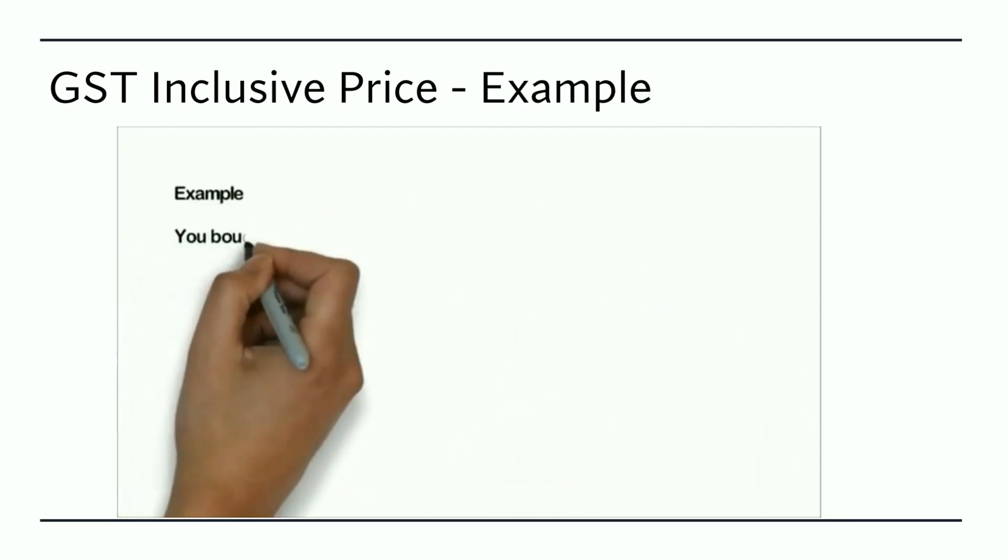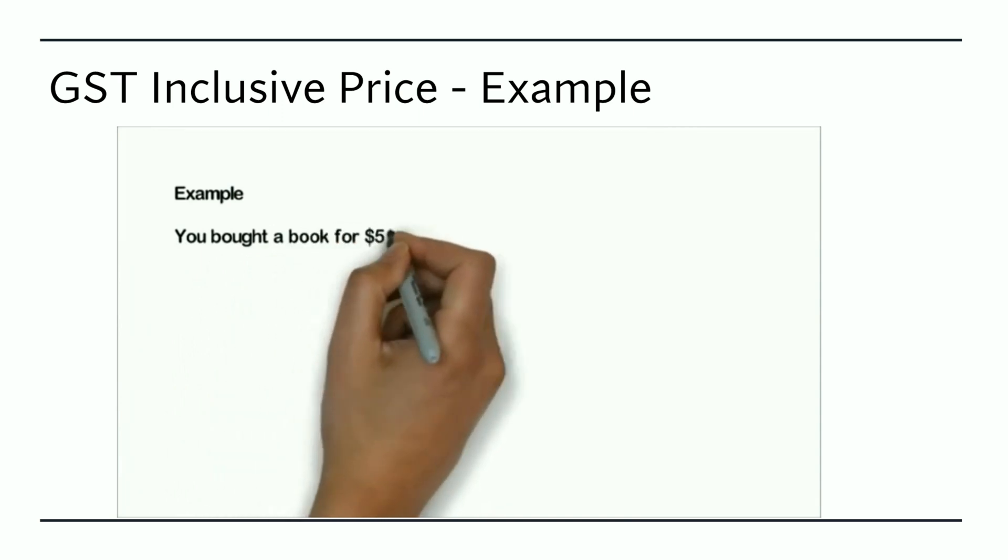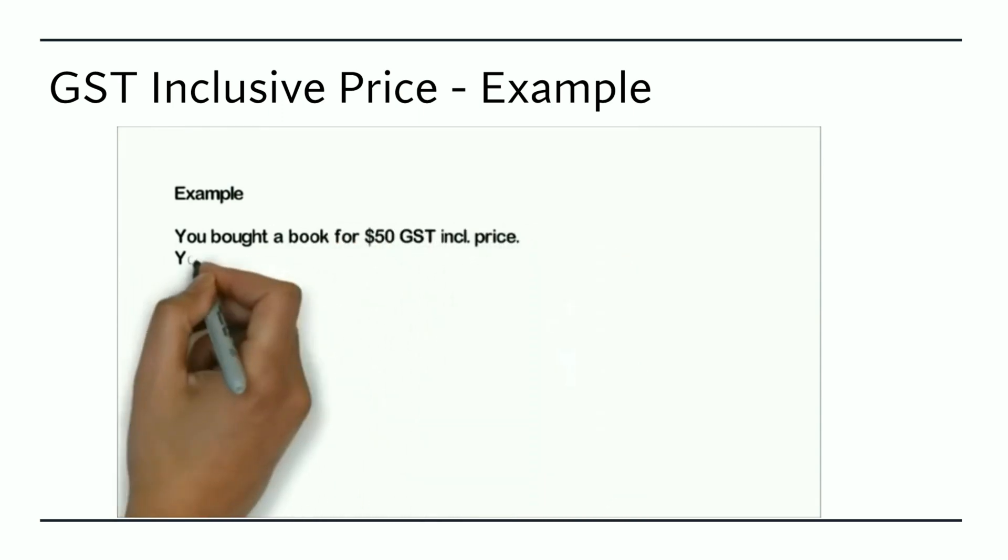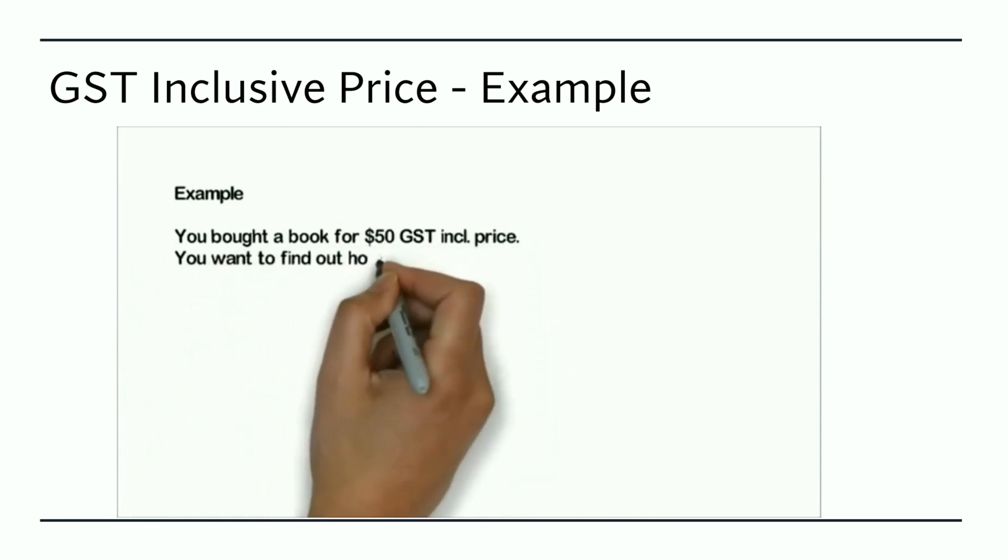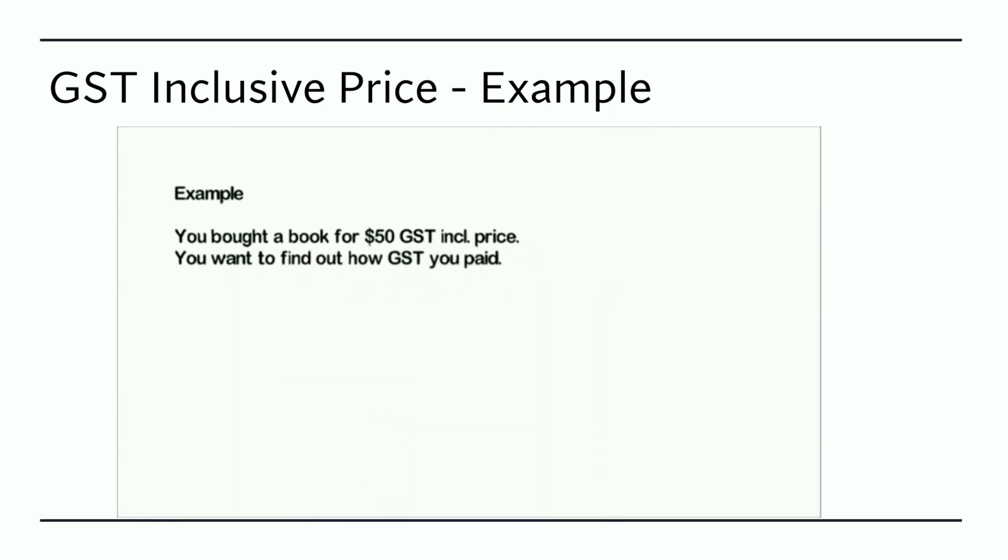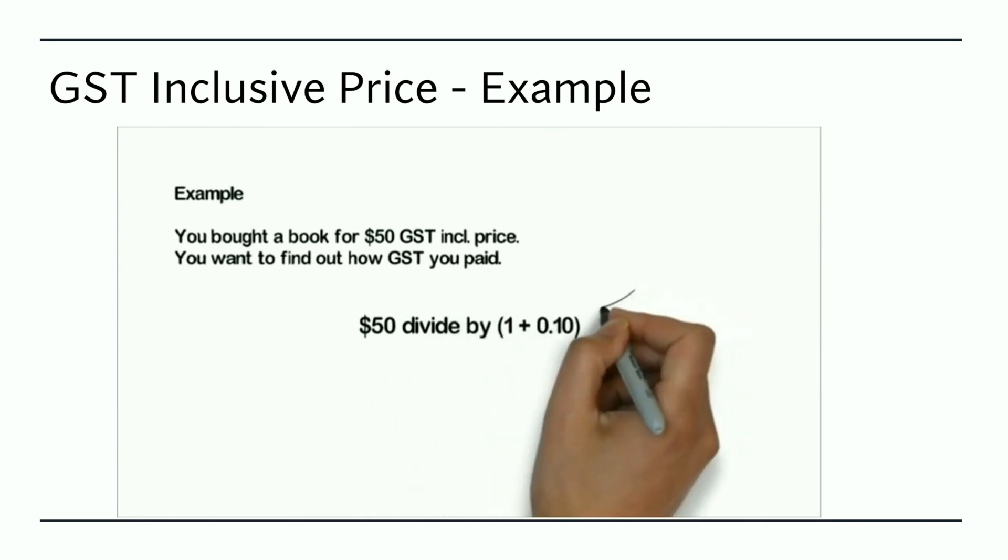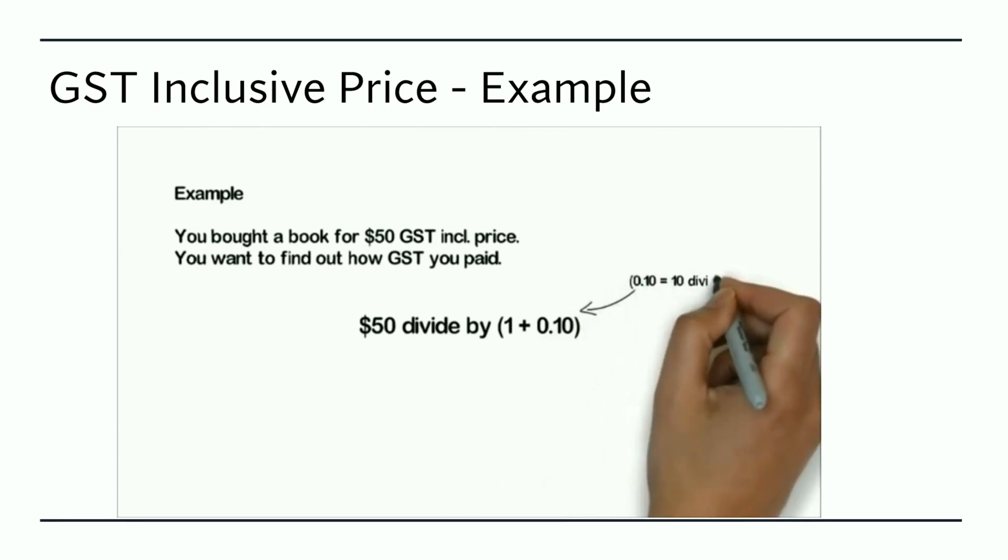For example, you buy a book for $50 GST inclusive price and want to know how much GST was paid. So you take the $50 and this is then divided by 1 plus the GST. Once again, we get the 0.10 by taking the 10% and dividing that by 100 to arrive at our decimal of 0.10.